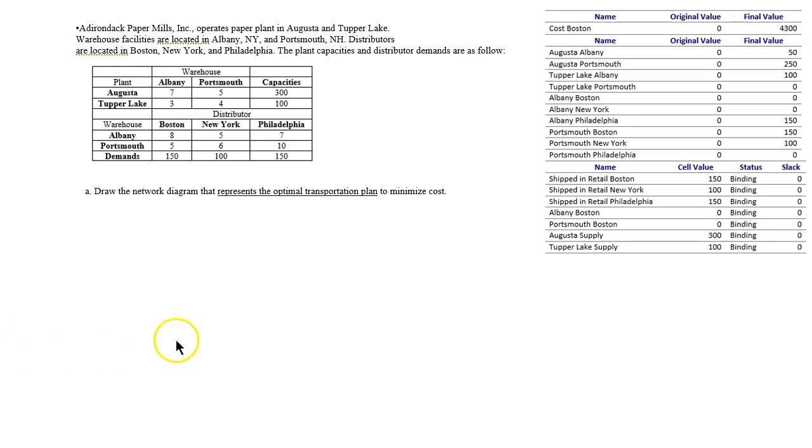Darren Dick Paper Mills Incorporated operates paper plants in Augusta and Tupper Lake. Warehouse facilities are located in Albany, New York and Portsmouth, New Hampshire. Distributors are located in Boston, New York and Philadelphia. The plant capacities and distributor demands are as follows, given here with the solution provided by Excel.